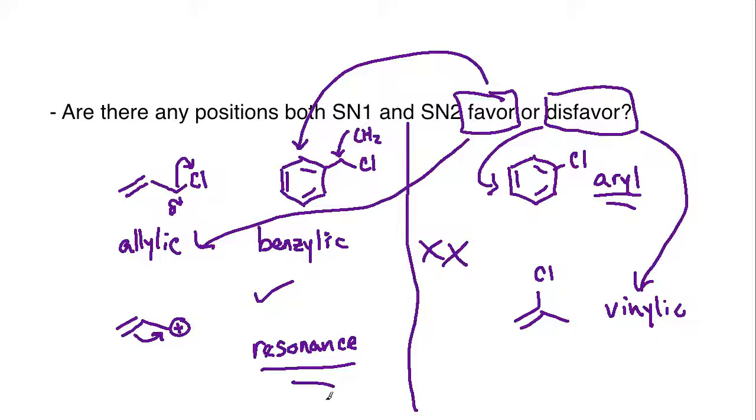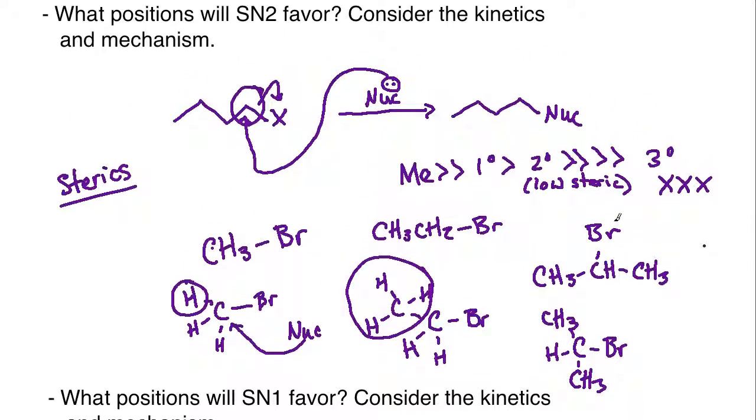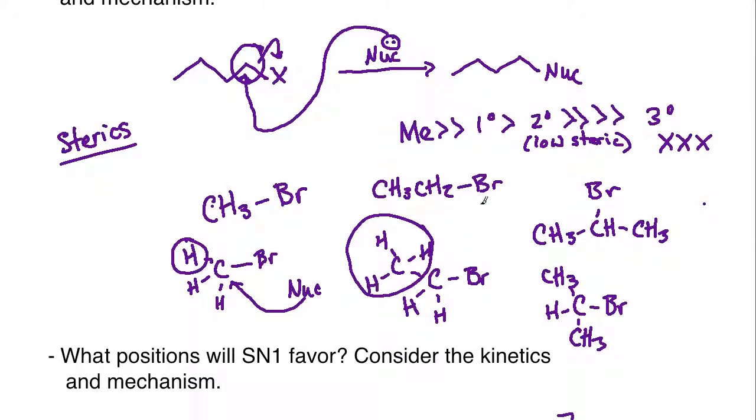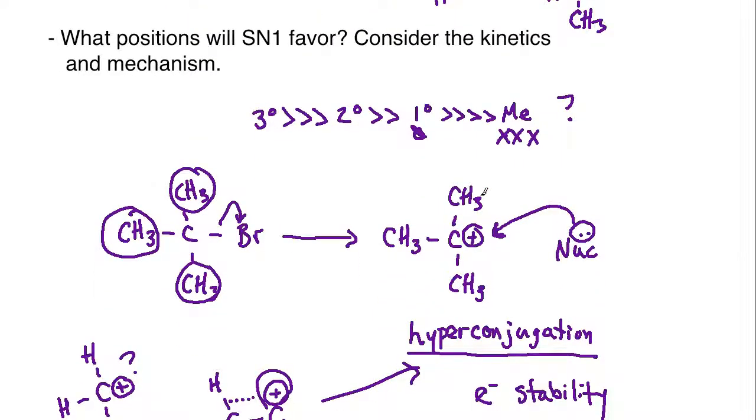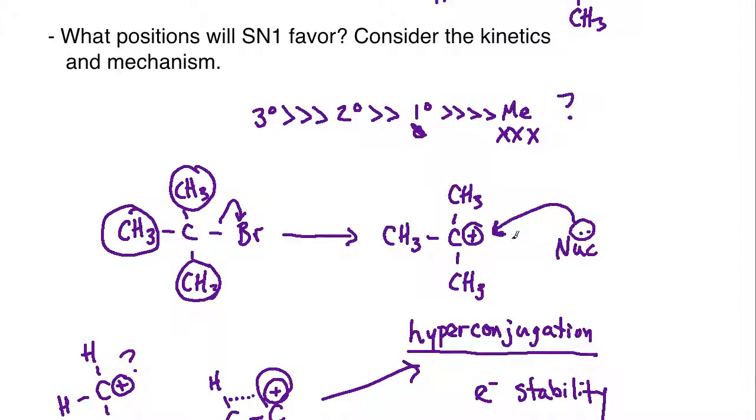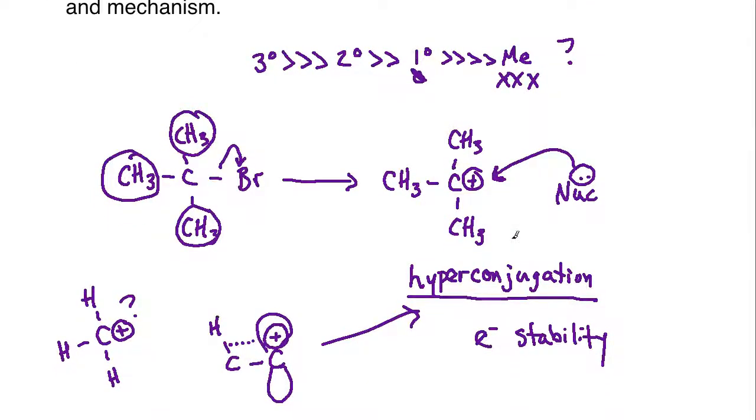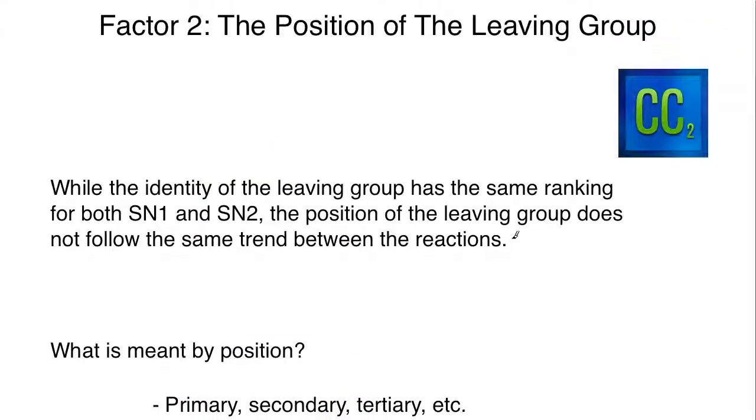That is going to conclude the position of the leaving group for SN1 and SN2, and the same premise for E1 and E2 when we get to the eliminations. To wrap up: the SN1 and SN2 will both favor allylic and benzylic. They will both disfavor the aryl and vinylic. When it comes to the regular non-resonance or non-sp2 hybridized situations, the SN2 will favor the least sterically hindered - the methyl, the primaries, a couple of secondaries if they're not hindered, no tertiaries. The SN1 is going to be favoring the tertiary and secondaries due to their hyperconjugation. The primaries would be rare if ever, they probably wouldn't exist. And methyls most definitely would not exist - there's no hyperconjugation whatsoever for methyl. Methyl cations are unicorns, they don't happen. We have now concluded factor two for this lecture.